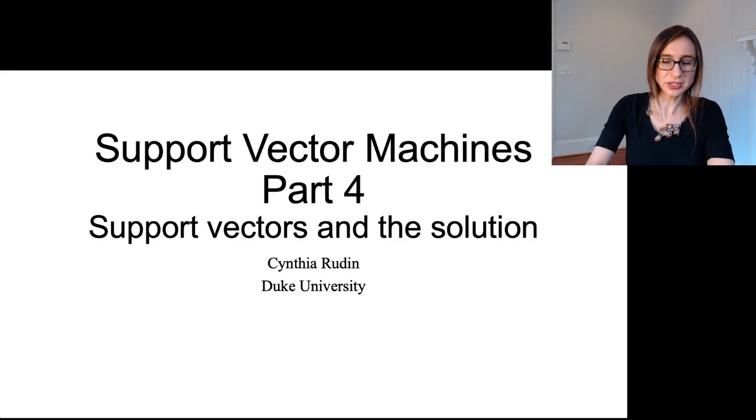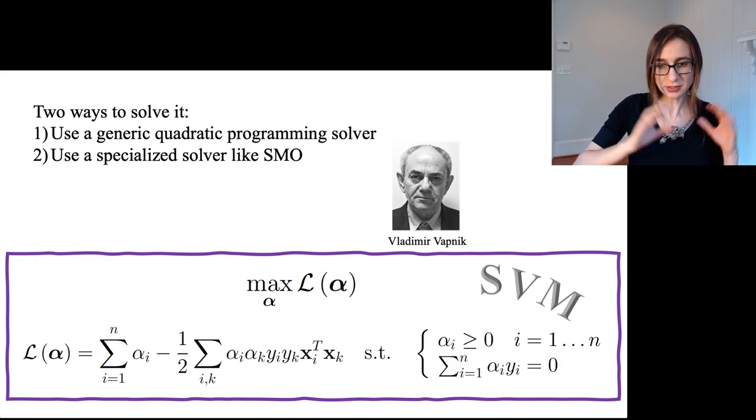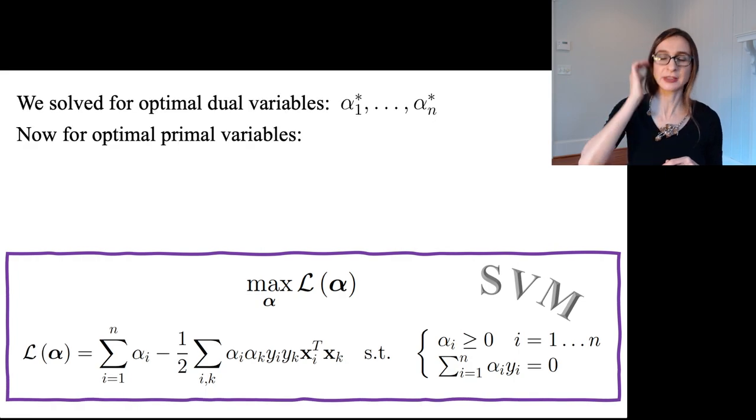Let's talk about the solution to the support vector machine optimization problem. Now, as I mentioned, there are two ways to solve it. One way is to use a generic QP solver, and another is to use a specialized solver like SMO. I'll talk about SMO in another video. But in any case, let's assume that you've solved this problem and that you have the alpha stars. And now you're going to try and use those alpha stars to recover the optimal primal variables, the lambdas.